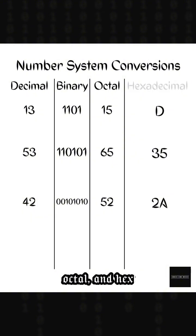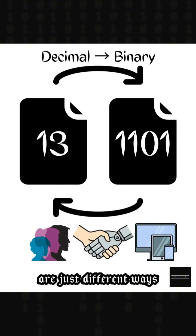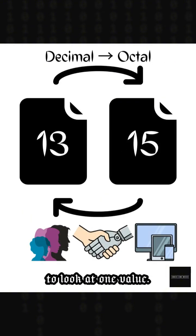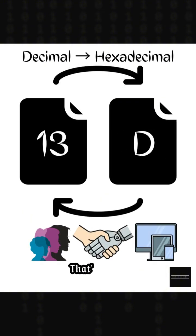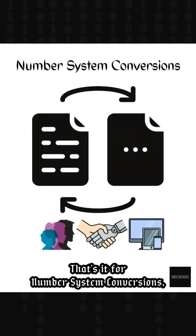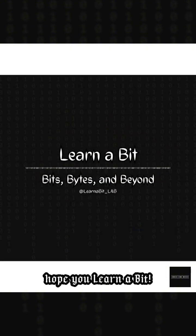Binary, decimal, octal, and hex are just different ways to look at the same value. That's it for number system conversions. Hope you learned a bit — 1, 0, 1, 0!